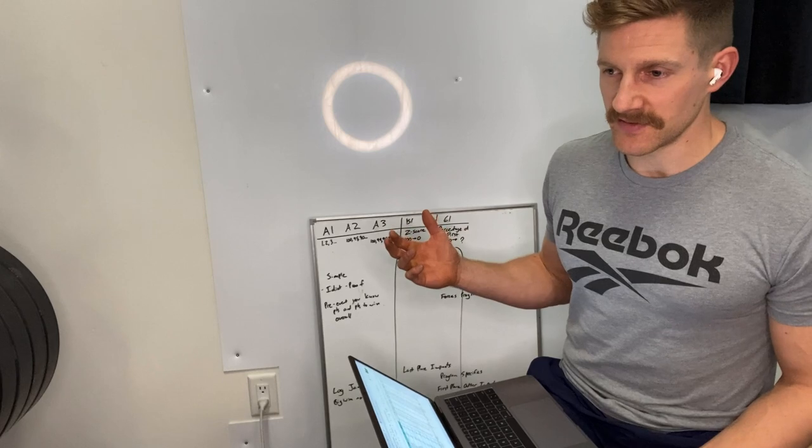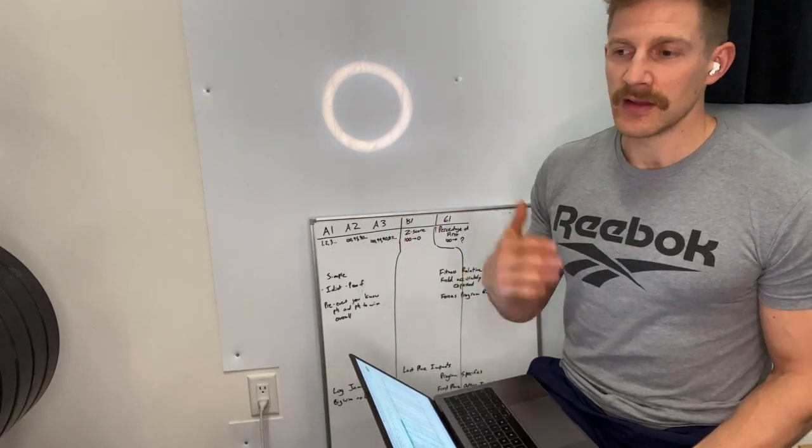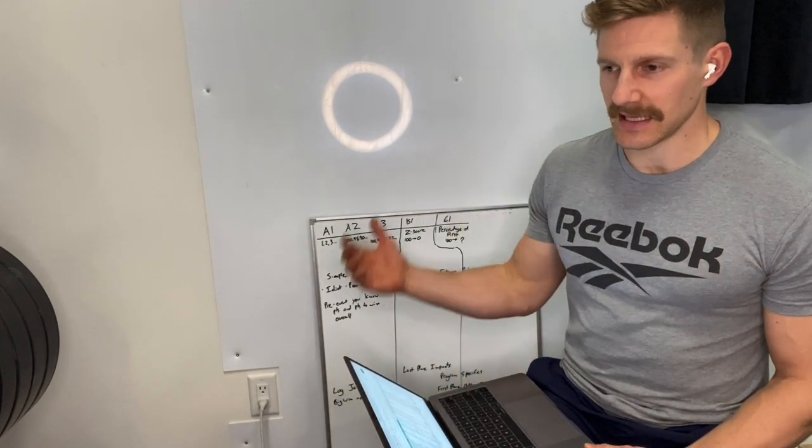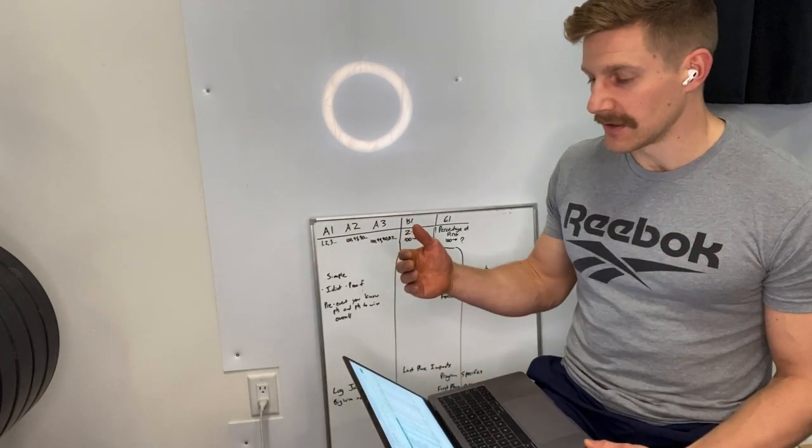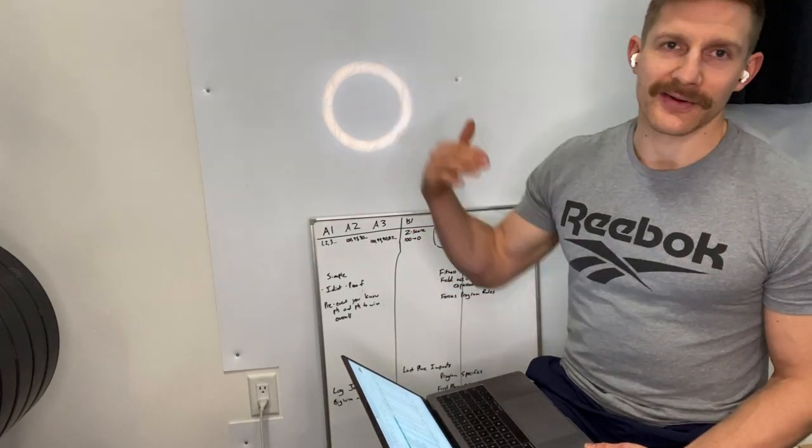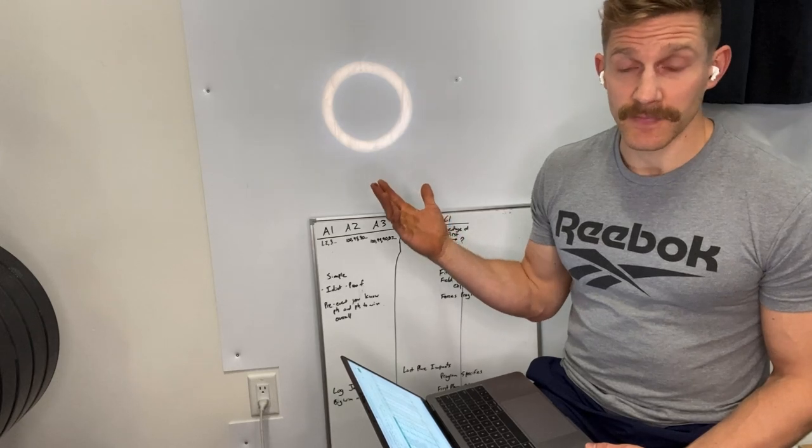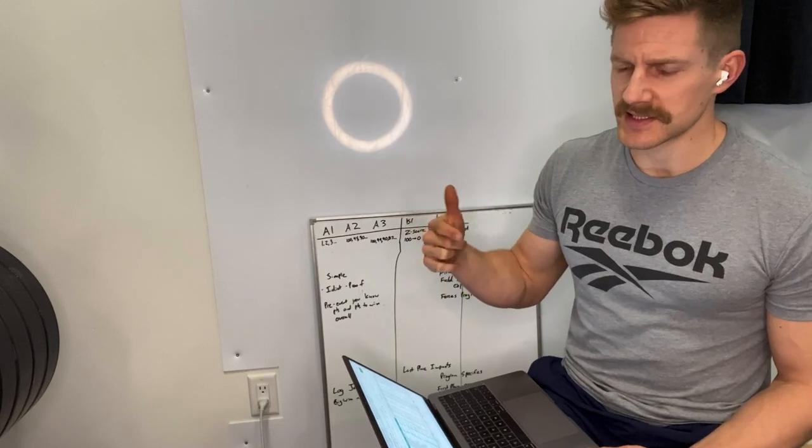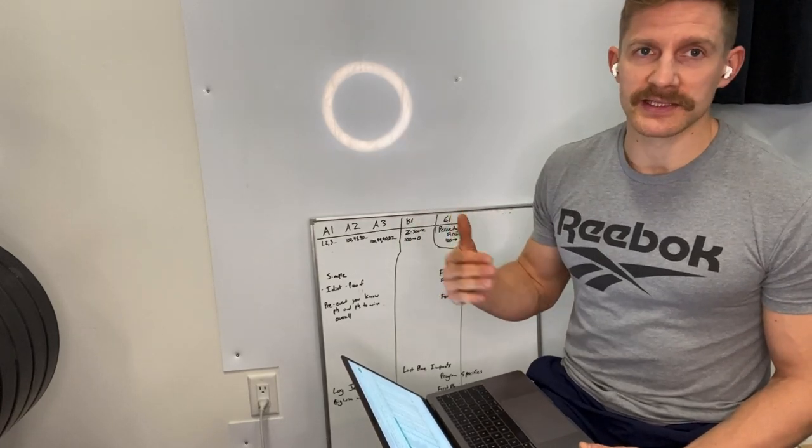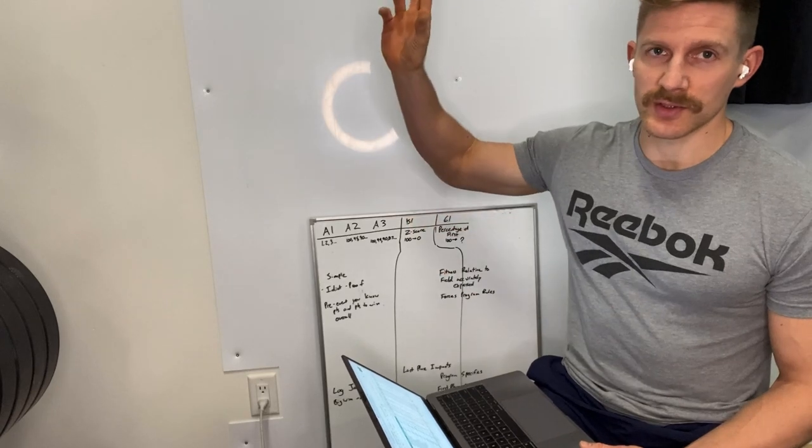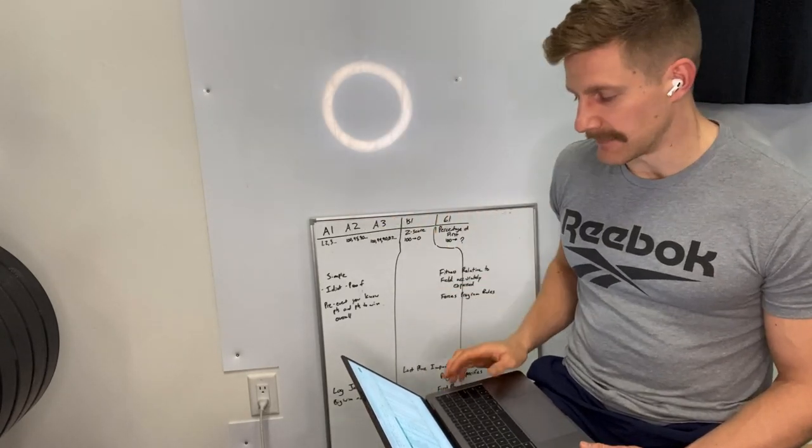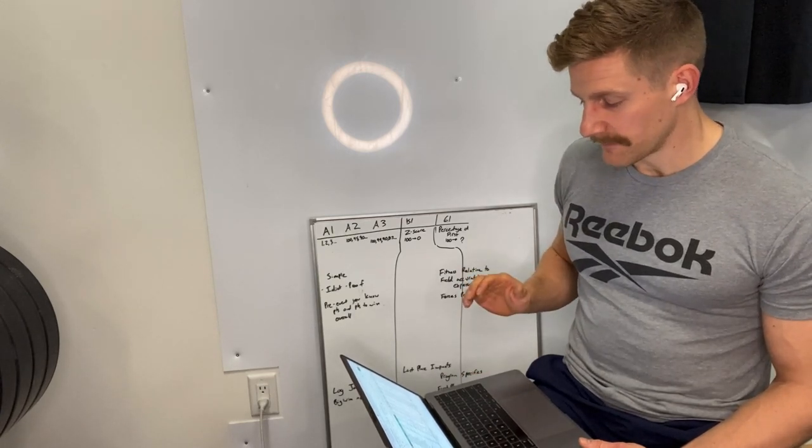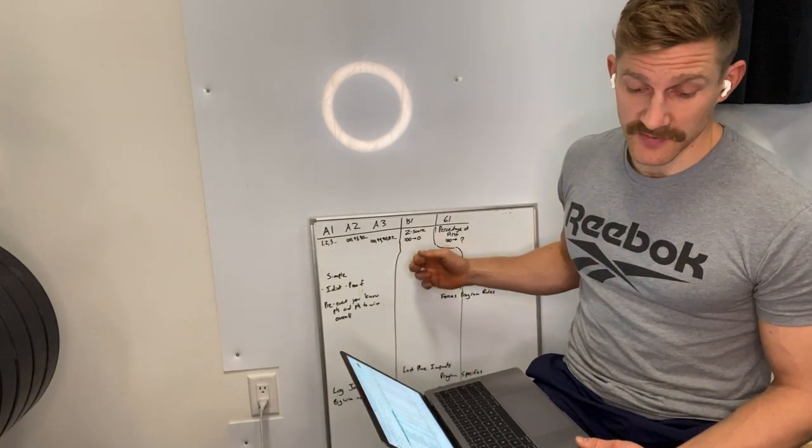When one person brings their score way down, it just becomes crazy. The last place person impacts scoring so much. At the top level you hope there's a bit of integrity, but what if someone's injured, they're hobbling around, it's a one-kilometer run and it takes them like eight minutes to finish? All of a sudden everyone's going to be between 100 and 90 points, and that workout didn't matter.